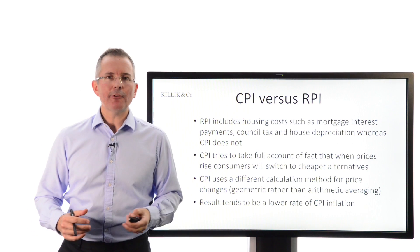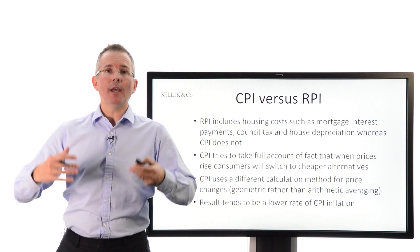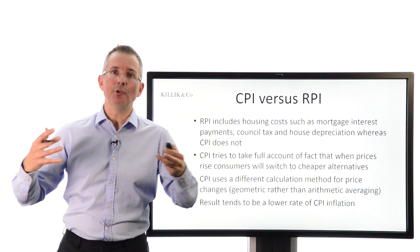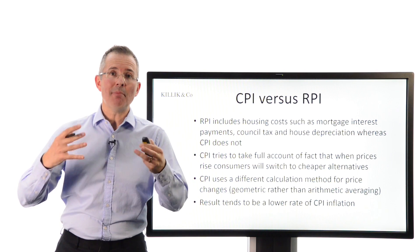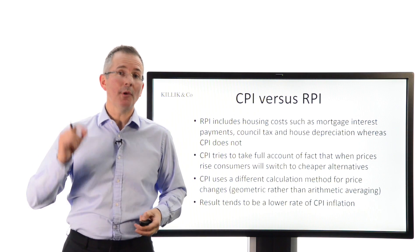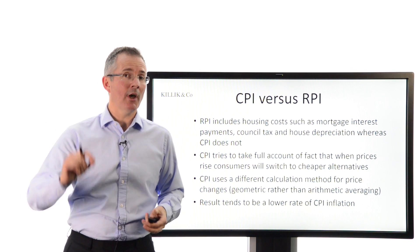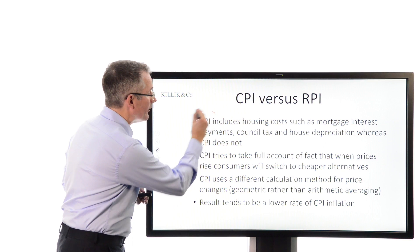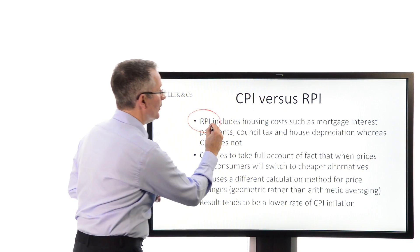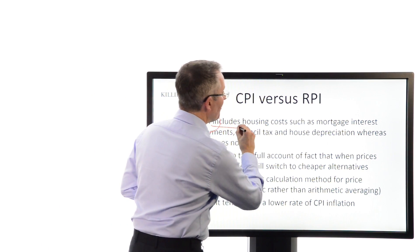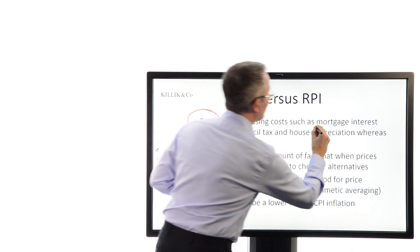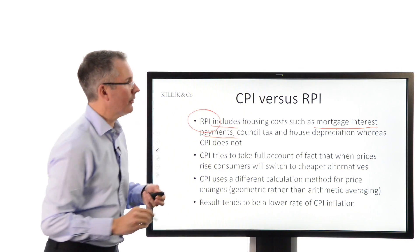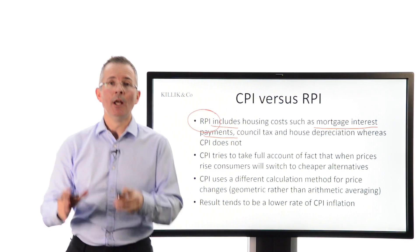What are the key differences between the two measures? Why can't you just have one basket and produce one measure of inflation? Well, there are two, and they're both quoted. First of all, the Retail Prices Index includes some key housing costs, and one of them is mortgage interest payments. The CPI doesn't.